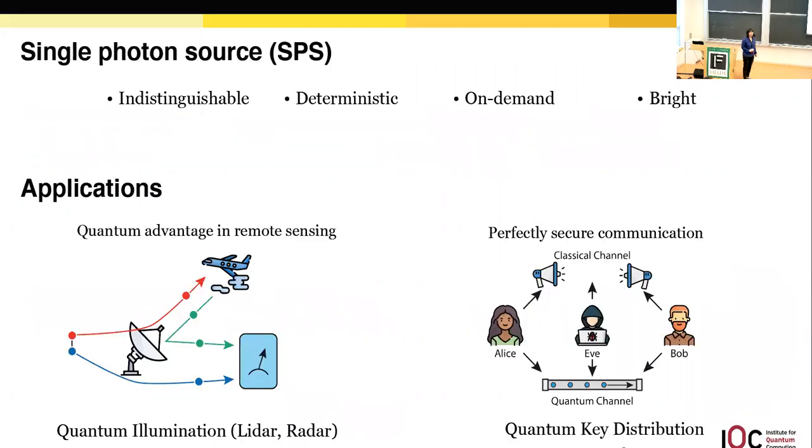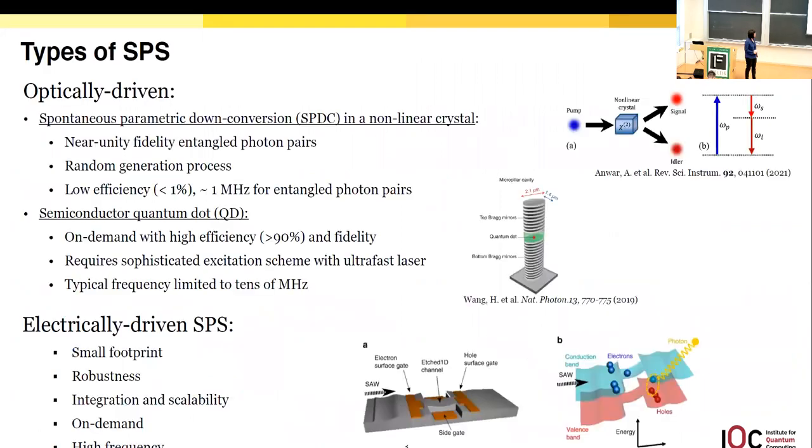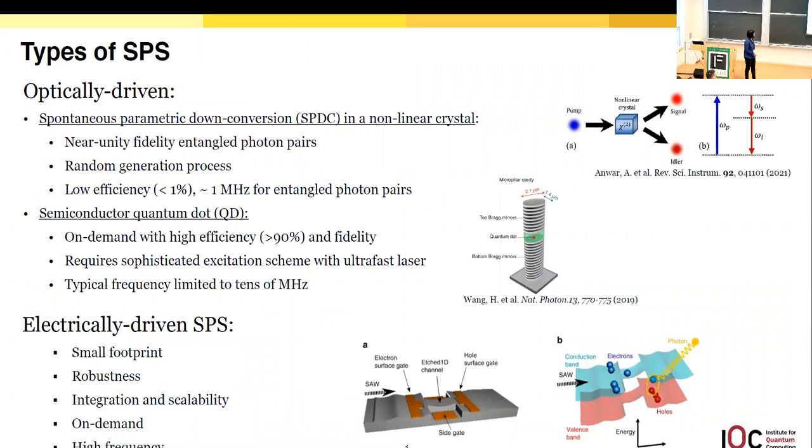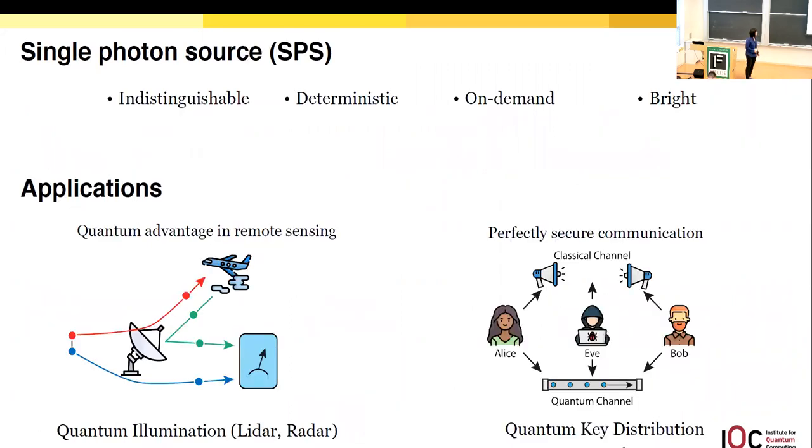A single photon source is a light source that emits indistinguishable single photons in a deterministic way on demand and with high brightness. Their applications include quantum LiDAR and quantum key distributions.